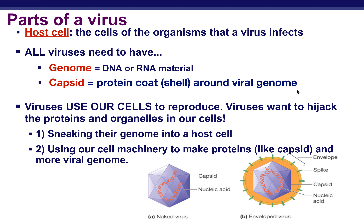All viruses just have to have that DNA and RNA material. That protective protein bubble is officially called the capsid. The capsid protects the DNA and RNA and assists its ability to infiltrate into the host. Viruses want to hijack the proteins and organelles inside the cell to utilize the machinery to make more of itself — more viral genome and more viral proteins like the capsid protein — in order to assemble new viruses that can burst out and take over other nearby uninfected host cells.